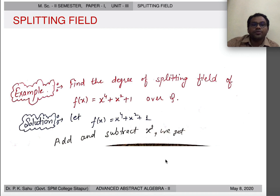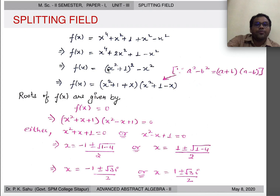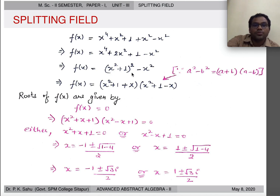Example 3: Find the degree of the splitting field of f(x) = x⁴ + x² + 1 over ℚ. To find its roots, we add and subtract x²: f(x) = x⁴ + x² + 1 = (x⁴ + 2x² + 1) - x² = (x² + 1)² - x². This is a difference of squares, so f(x) = (x² + x + 1)(x² - x + 1).